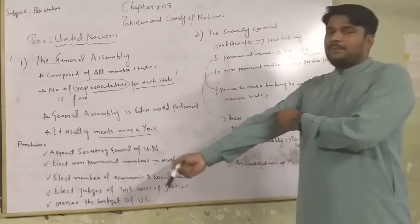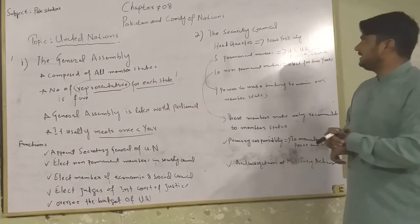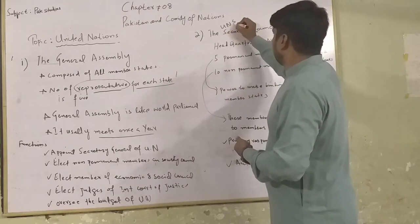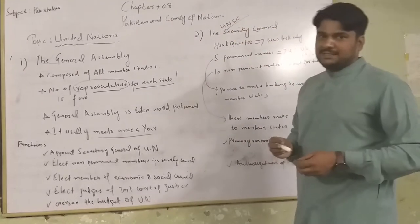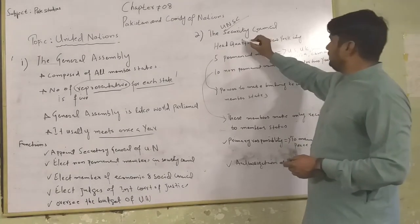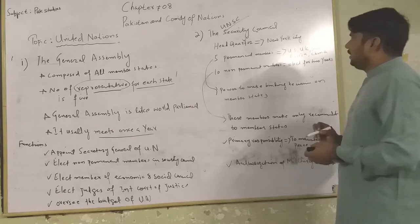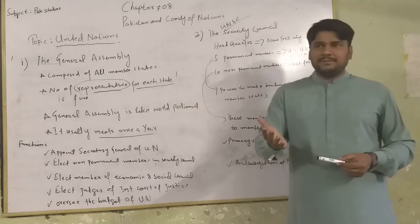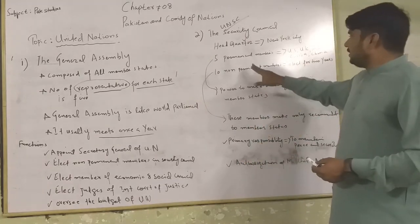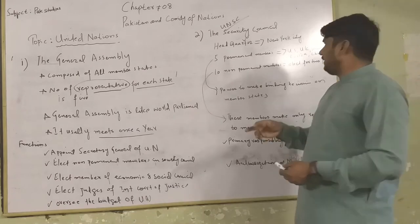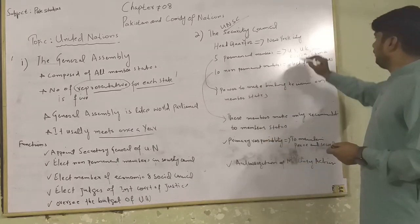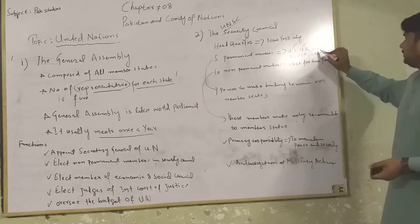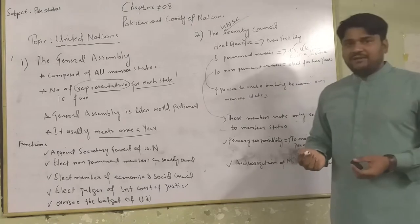The second principal organ is the United Nations Security Council (UNSC). Its headquarters is also in New York, USA. The Security Council has permanent and non-permanent members. The five permanent members are: USA, UK (United Kingdom), France, Russia, and China.